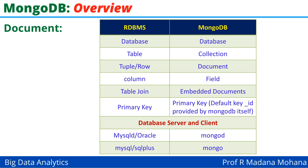For the database server and client: in RDBMS it is called mysqld or Oracle; in MongoDB it is simply called mongod to start the server or service. The RDBMS client is mysql or sqlplus, whereas in MongoDB the client is simply mongo. When practicing MongoDB commands, remember to first start the database server using mongod, then minimize and open another prompt where you type mongo to open the client prompt.